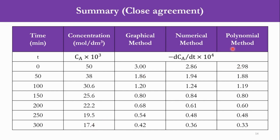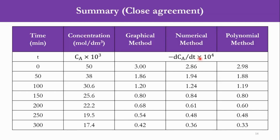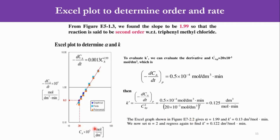We focus on time, concentration, and numerical methods. Time data runs from 0 to 300 minutes at 50-minute intervals. From the numerical method, −dCa/dt × 10⁴ values are: 2.86, 1.94, 1.24, 0.84, 0.60, 0.48, and 0.36. Drawing a natural log plot between Ca and −dCa/dt, we find the slope to be approximately 1.9, so the reaction is second order with respect to triphenylmethyl chloride — consistent with what the integral method had given us to prove.